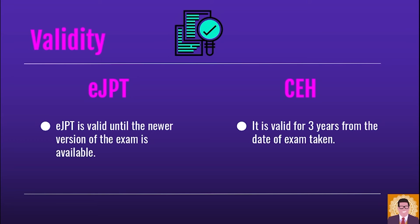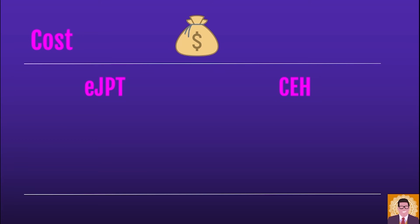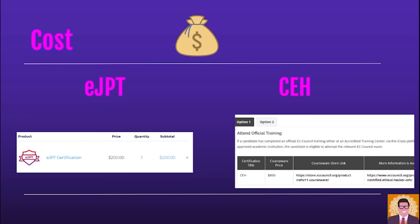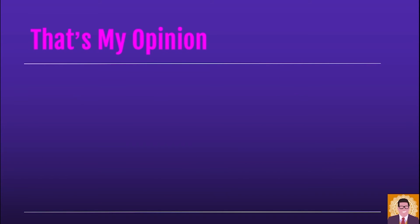Our last comparison pillar, which could be a major deciding factor, is cost. The eJPT exam voucher is $200, and for training you can opt for the INE Starter Pass. For CEH, you can buy the courseware for $850, which includes training and exam cost. If you want to appear for the exam directly, you have two options: a Pearson VUE voucher at around $1,199 or an ECC exam voucher at around $950.